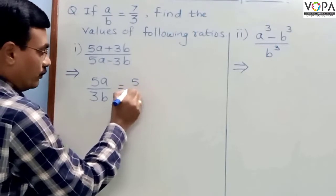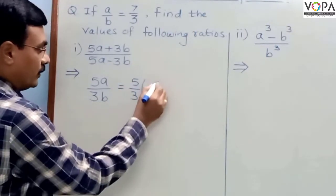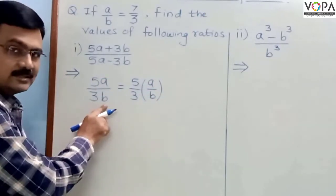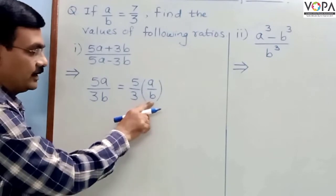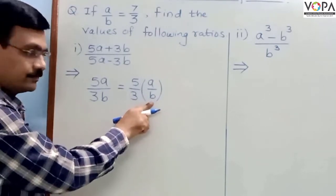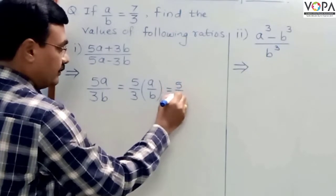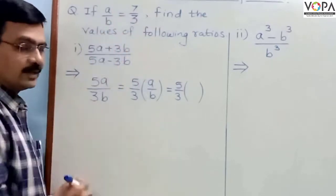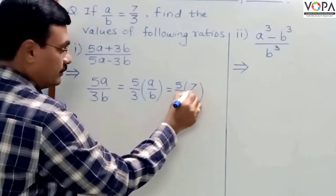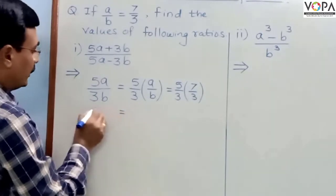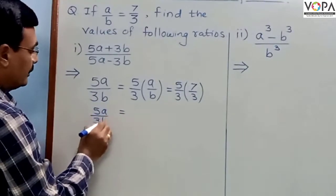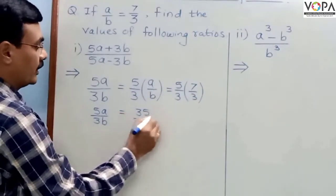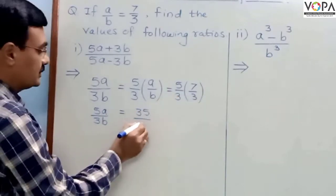To find that value, we can write 5A upon 3B by using the known value of A upon B. We know the value of A upon B is 7 upon 3. So 5A upon 3B can be written as 5 multiplied by 7, which is 35, upon 3 multiplied by 3. That product is 9. So 5A upon 3B equals 35 upon 9.